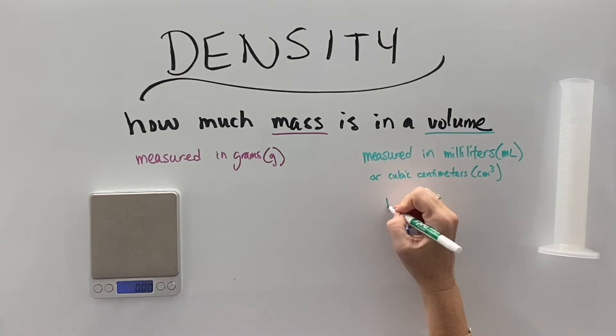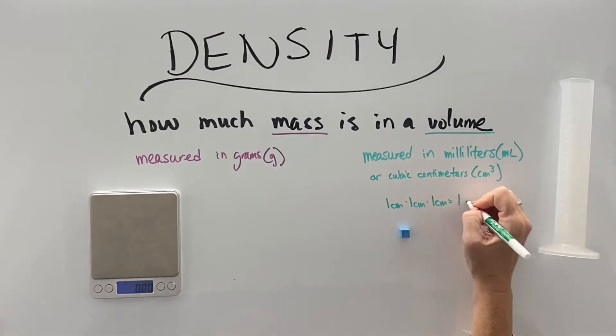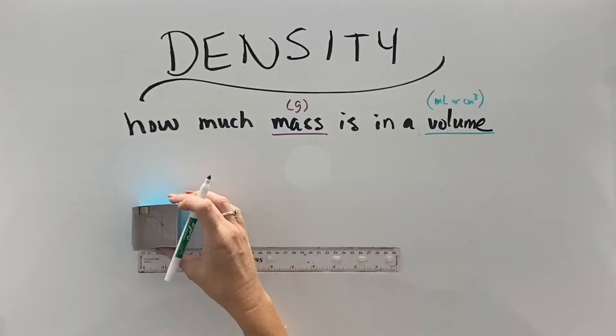Now, a cubic centimeter is called such because all three sides of it are one-centimeter measurements, and so we get one times one times one is a cubic centimeter, a centimeter that's cubed.